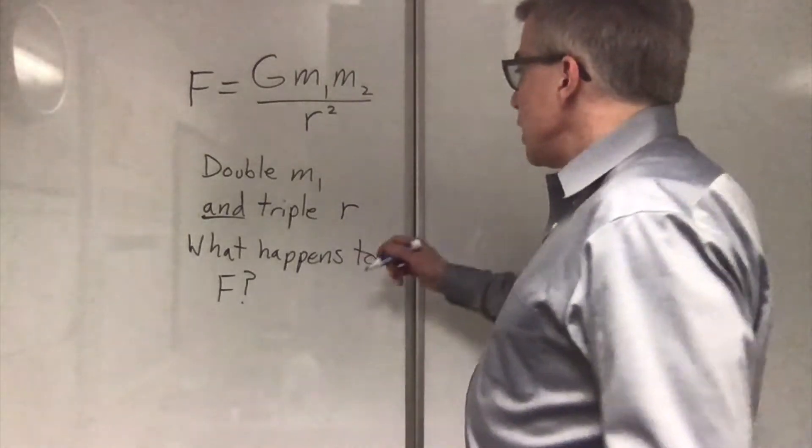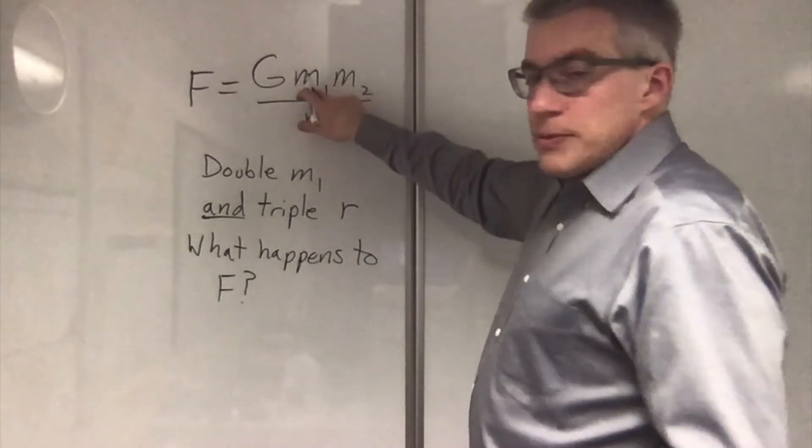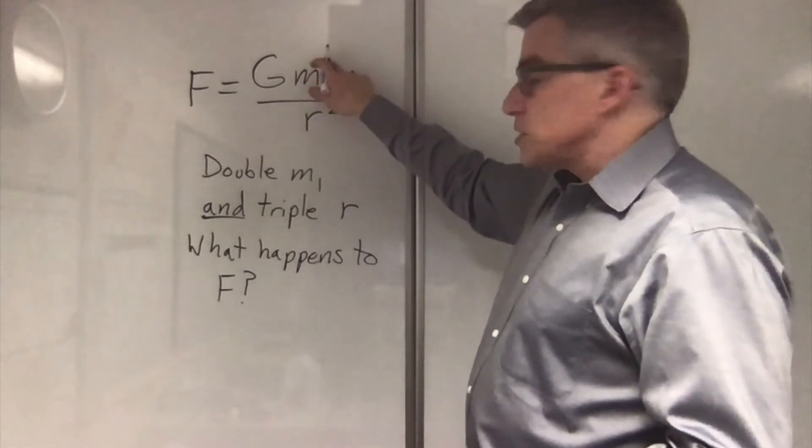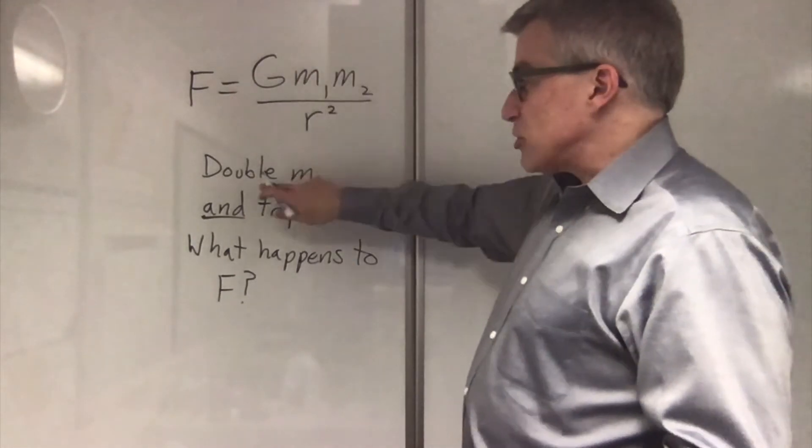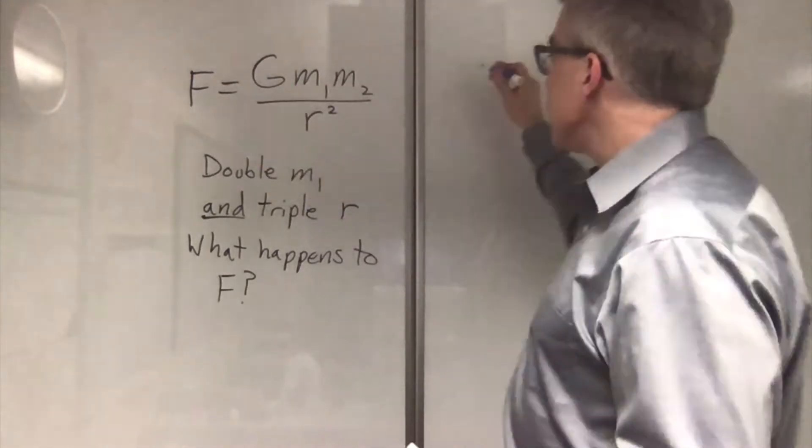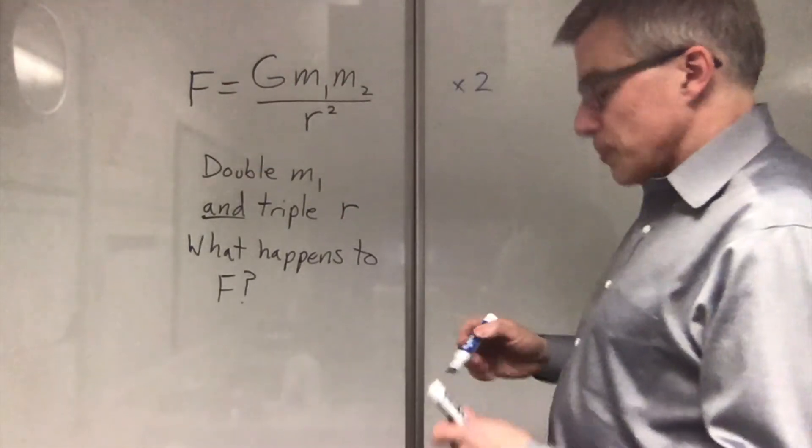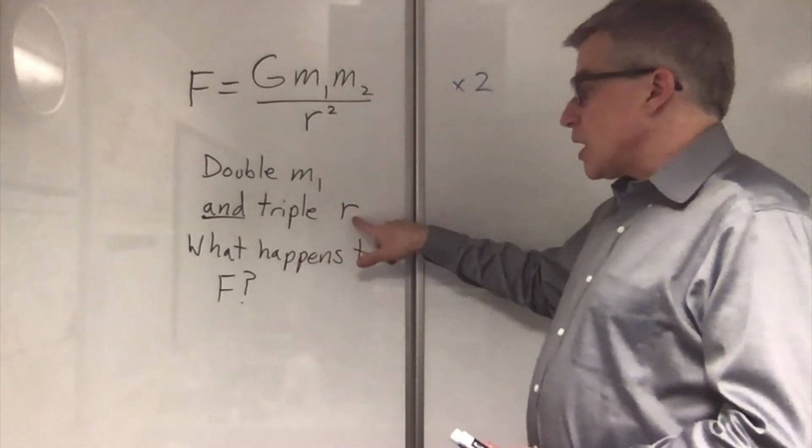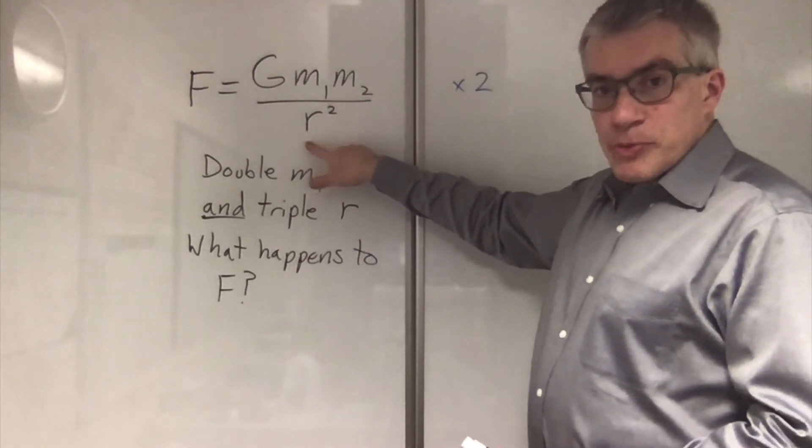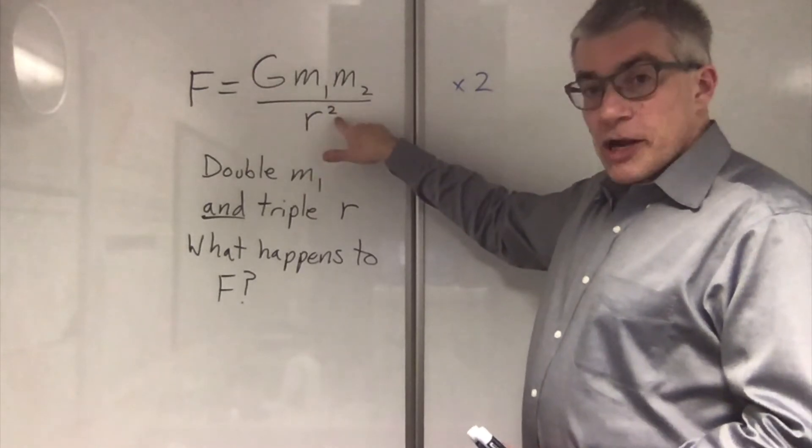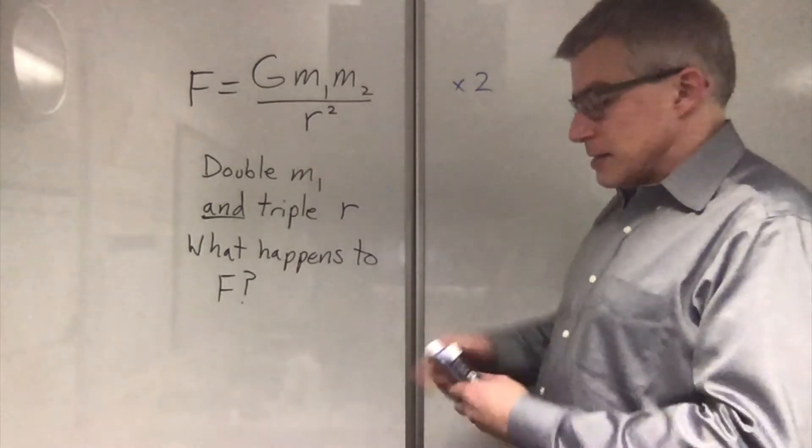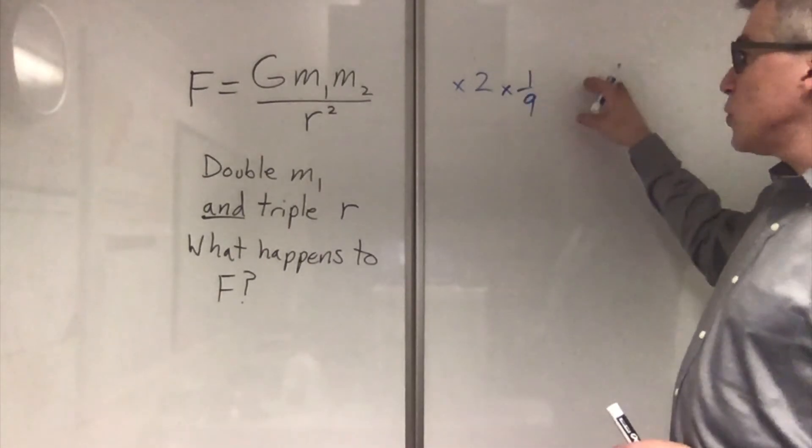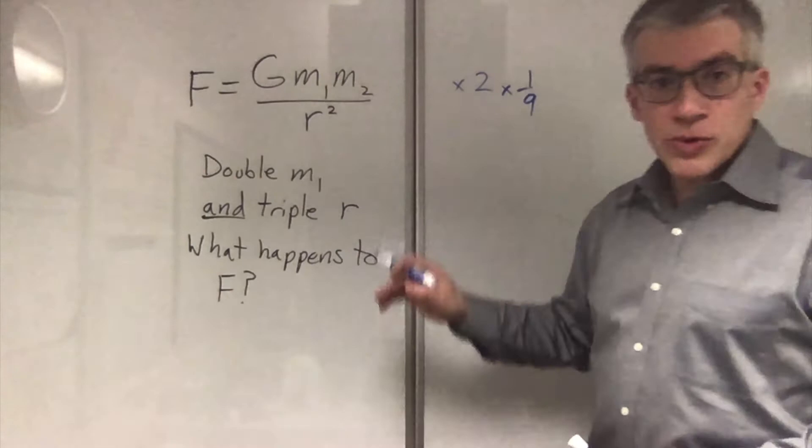So how do we work this out quickly? Well, take them one at a time. If all it was was double m1, m1 is on the top, so f will get bigger. It's to the first power, so just by a factor of two. Because I doubled m1, I'll double f. So times two. But then I triple r. r is in the bottom. Triple, that's a three. It's squared, that's nine. So one ninth times two and times one ninth. So the force is two ninths of the prior force.